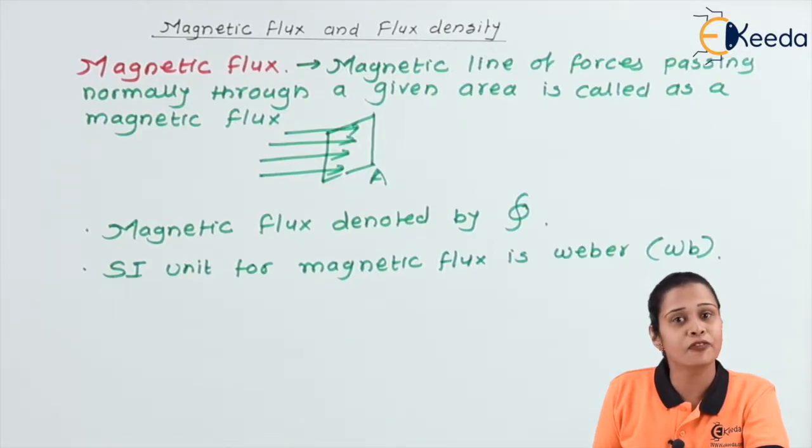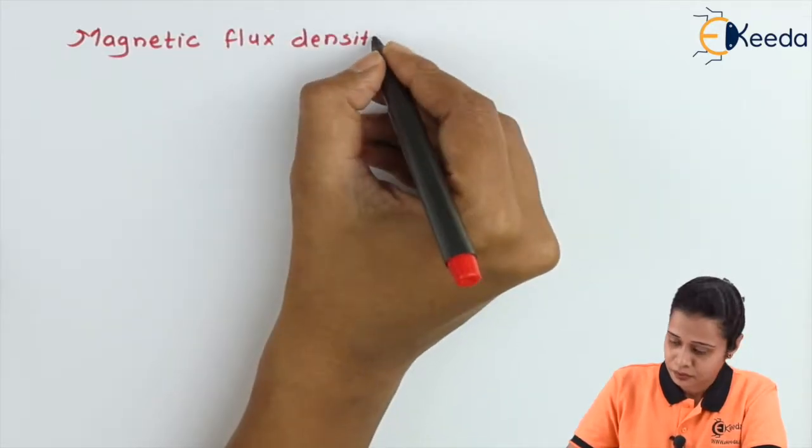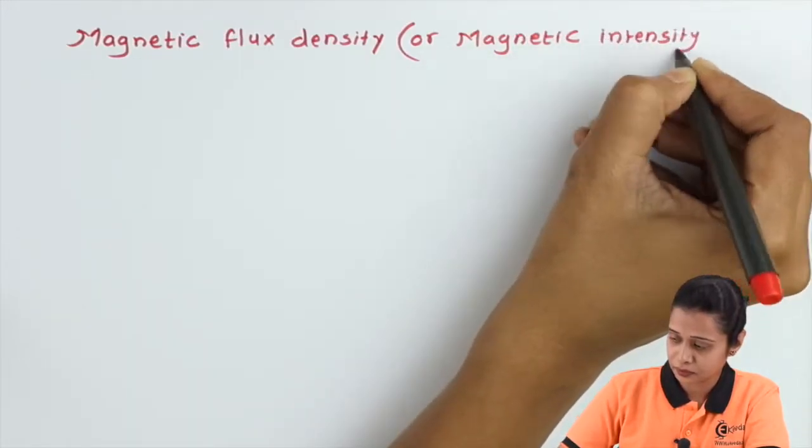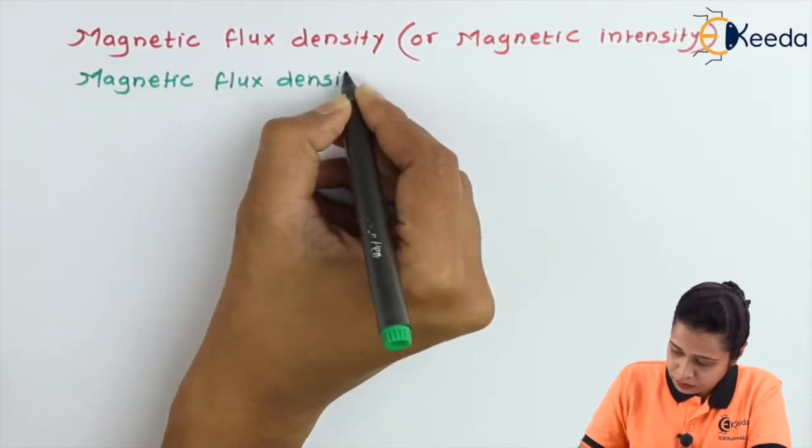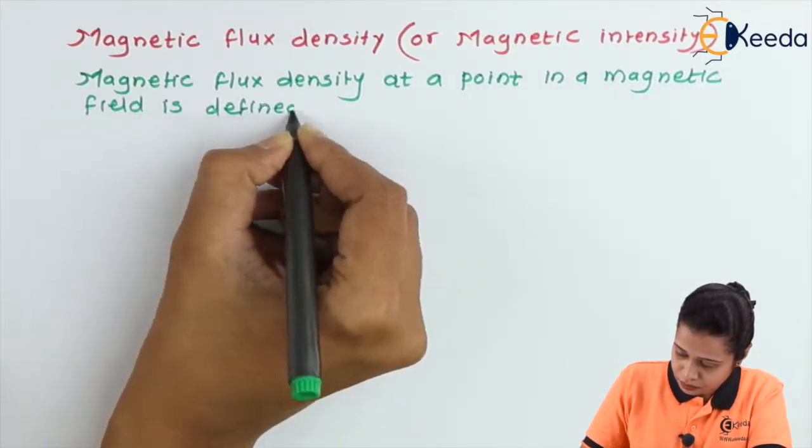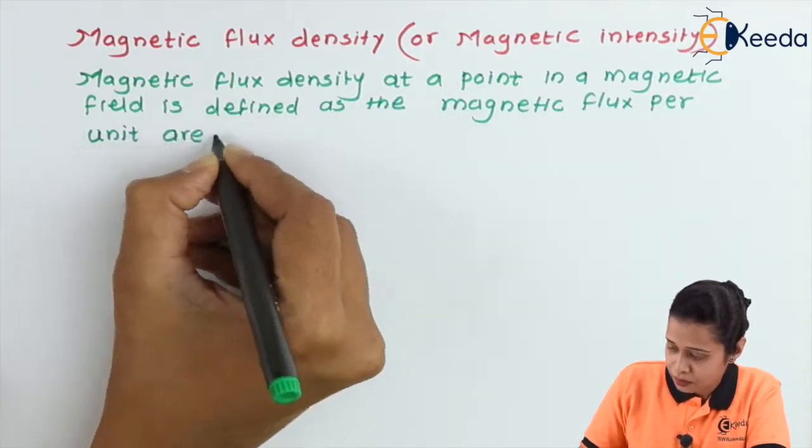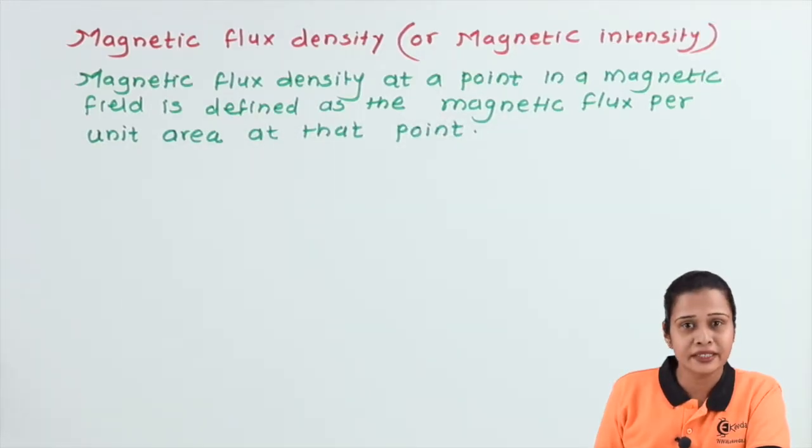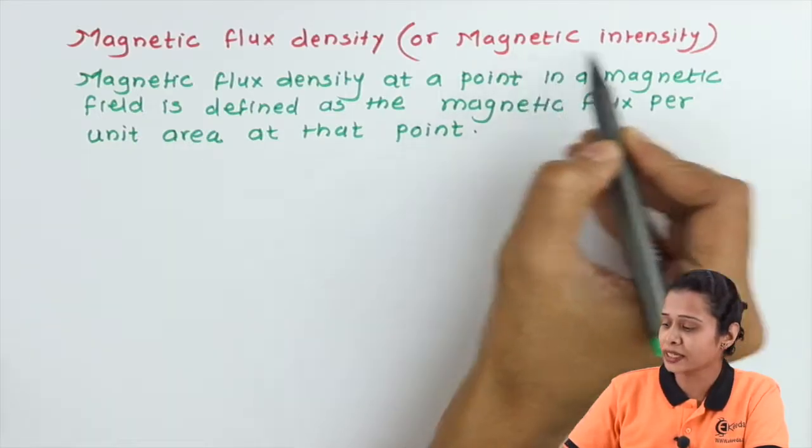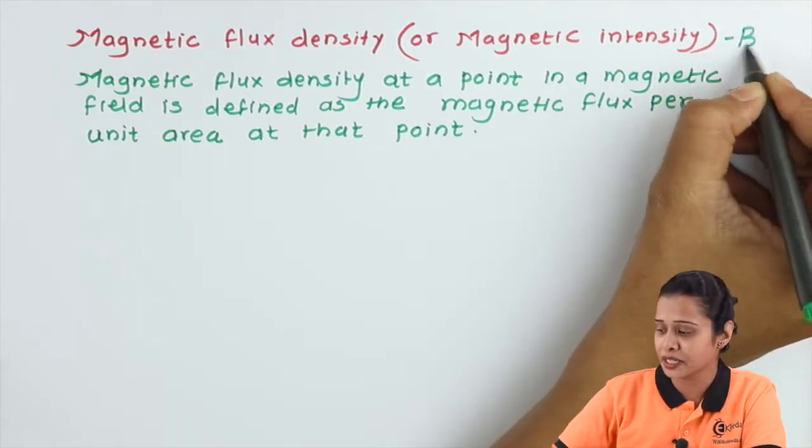We will see what is magnetic flux density. This is also called as magnetic intensity and it is denoted by symbol B, that is capital B.